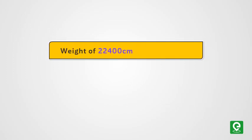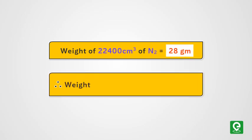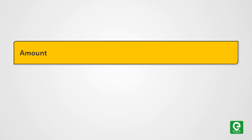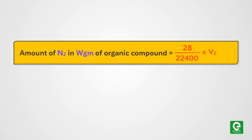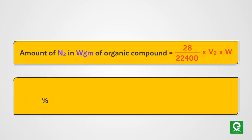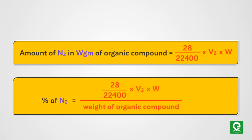Now we know that at STP weight of 22,400 centimeter cube of nitrogen gas is 28 grams. Therefore weight of V2 centimeter cube of nitrogen gas at STP is 28/22,400 × V2 grams. Amount of nitrogen present in W grams of organic compound is 28/22,400 × V2 × W. Now percentage of nitrogen is 28/22,400 × V2 × W divided by weight of organic compound into 100.